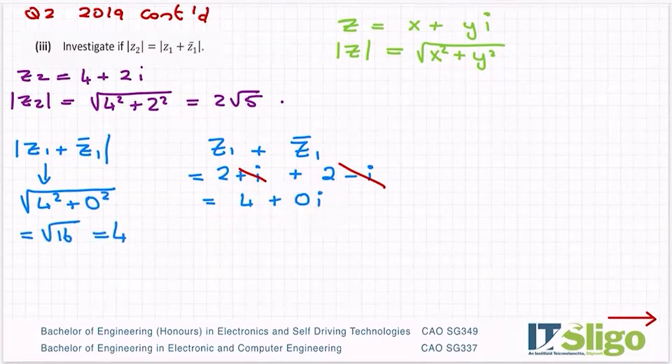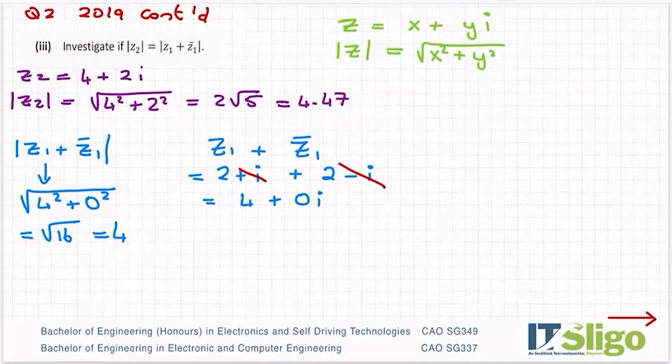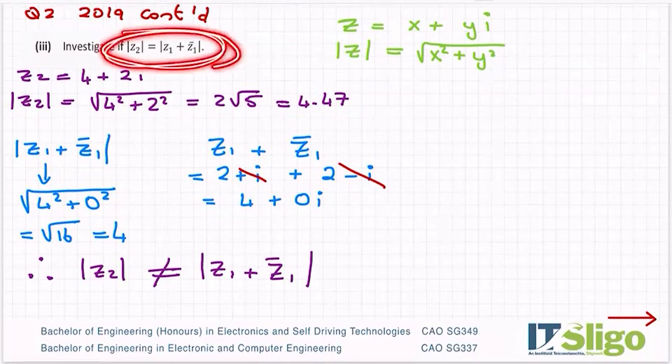I'm just going to go back to my 2 root 5 and change it to a decimal. I still have it in my calculator: 4.47. So are they equal? Is that number equal to that? Well no, they're not. So what I write down then in maths language is therefore the modulus of Z2 is not equal to the modulus of Z1 plus Z1 bar. That's how you cope with any of this, and this comes up a lot. You'll see a lot of these type of questions as you go through the exam papers.